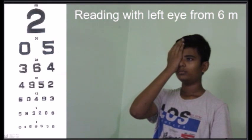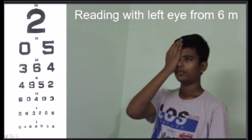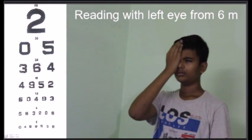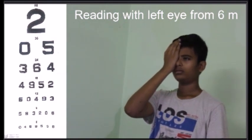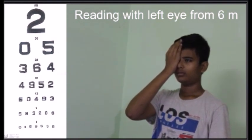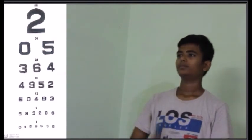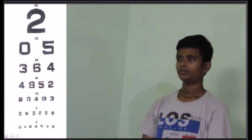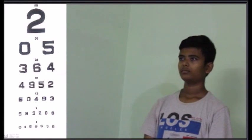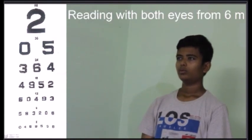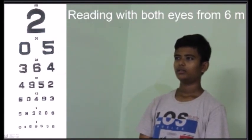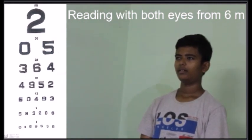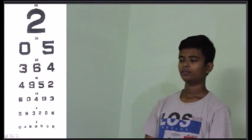Cover your right eye and read. [Subject reads: 2, 05, 3, 6, 4 — then cannot read further.] So for the left eye also his vision is 6/24. Now read with both eyes. [Subject reads similarly and cannot read past the same line.] Binocular vision is also 6/24.